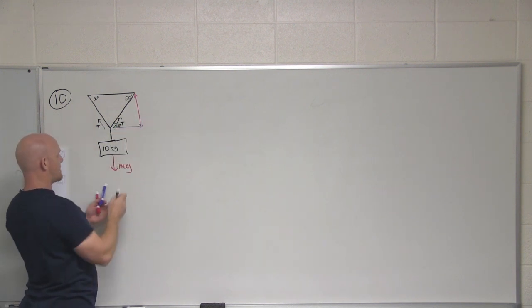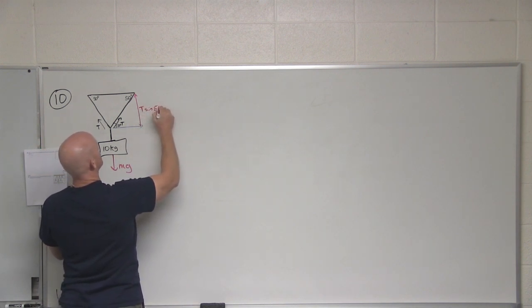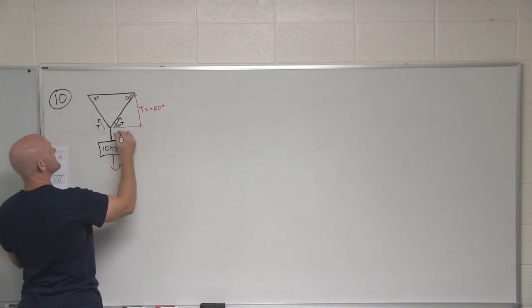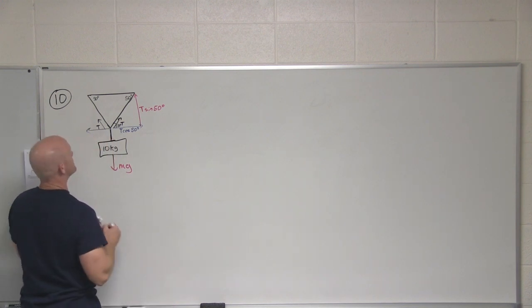So for the y component, that's the opposite side, and we see that this is going to be t sine of 50 degrees. And for the x component, that's the adjacent side, that's t cosine of 50 degrees. And we've got the exact same components on the other side as well.